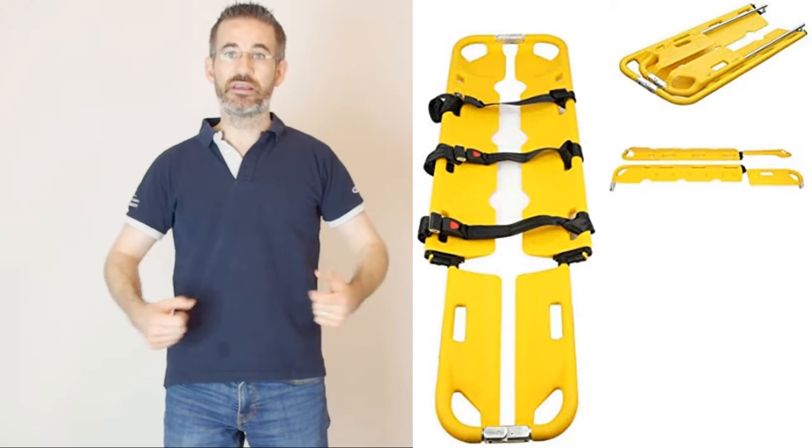Let's take this other example of when I'm training paramedics. This yellow board here is where they will put your body when you fall on the ground or have an accident. There are two ways to position your hands when they want to lift you. Look, in this picture...